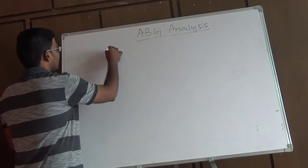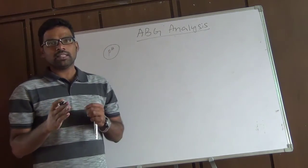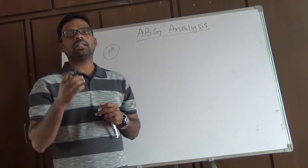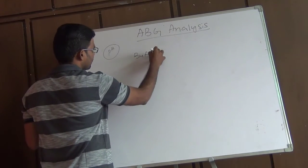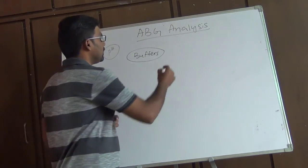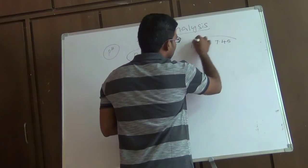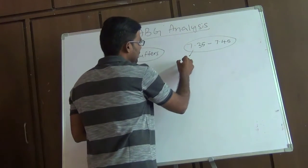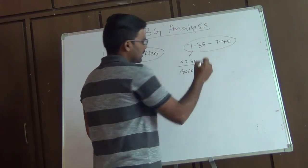Normally in the body, the pH is well maintained. There are many mechanisms in the body which maintain the pH. The pH in the blood or body fluids is maintained by the help of buffers. There are some buffers in the body which maintain the pH. The normal pH ranges from 7.35 to 7.45.